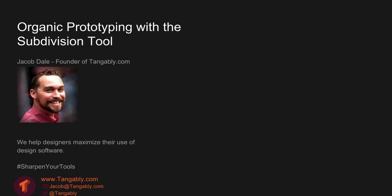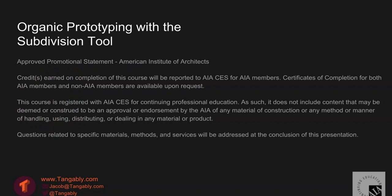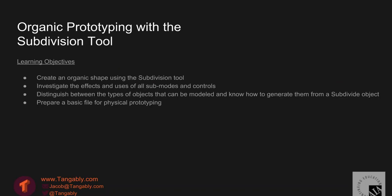We have a lot in store for you, so please stay tuned. This is available for AIA credits, so if you're looking for learning credits, there will be a brief quiz following this webinar. Today our learning objectives are to create an organic shape using the subdivision tool, investigate the effects and uses of all the sub-modes and controls of this tool, distinguish between the types of objects that can be modeled, know how to generate them from a subdivide object, and prepare a basic file for physical prototyping, which is actually pretty straightforward out of Vectorworks.